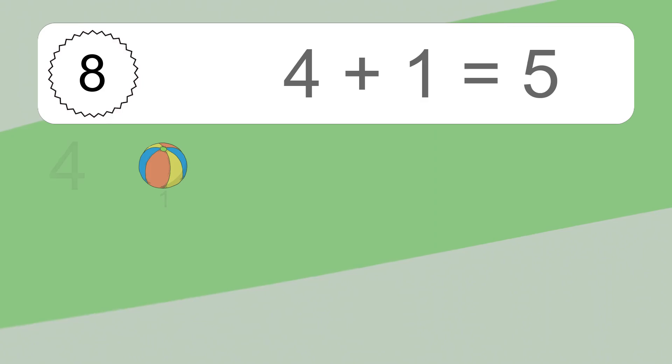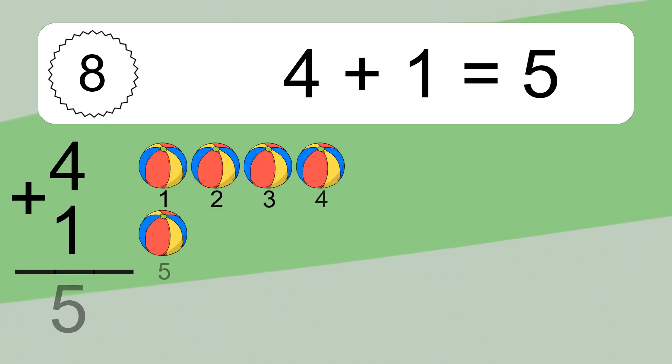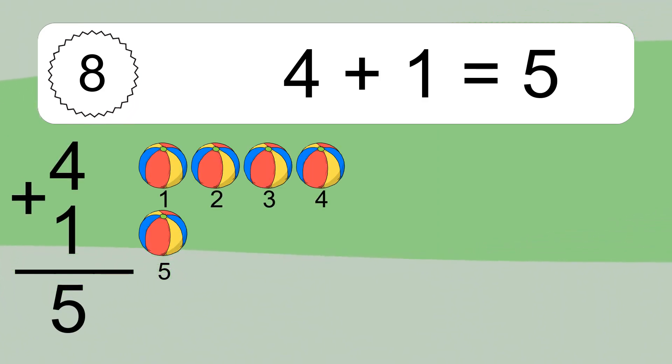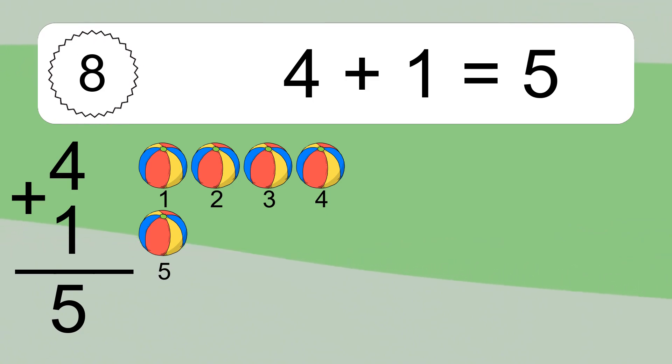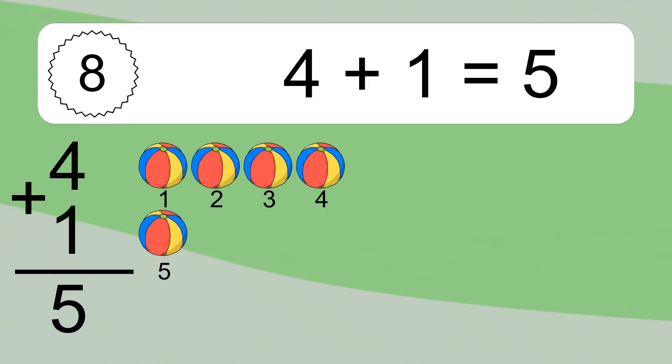4 plus 1 equals 5. Let's count it. 1, 2, 3, 4, 5.